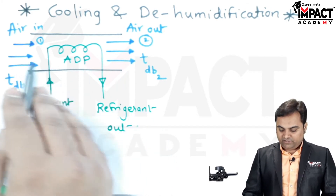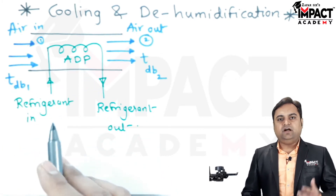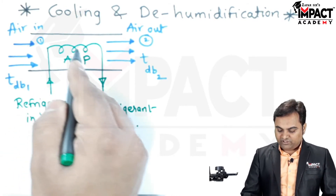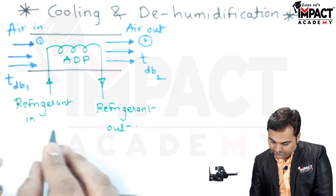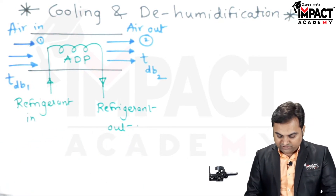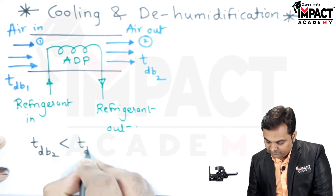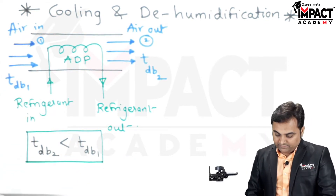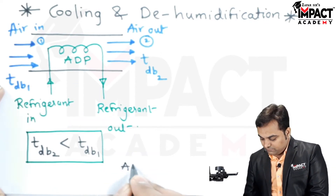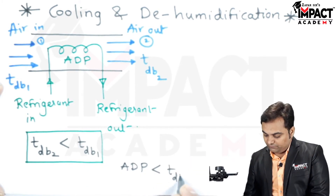What happens here is that the moisture present in the air would be condensed, and in this way the amount of moisture in the air is reduced — that is dehumidification. At the same time we are cooling this air, so the process is cooling and dehumidification. We can say that the dry bulb temperature of the air which is leaving, Tdb2, is less than Tdb1 of the entering air, and the apparatus dew point temperature of the cooling coil is less than the dry bulb temperature of the exit air.